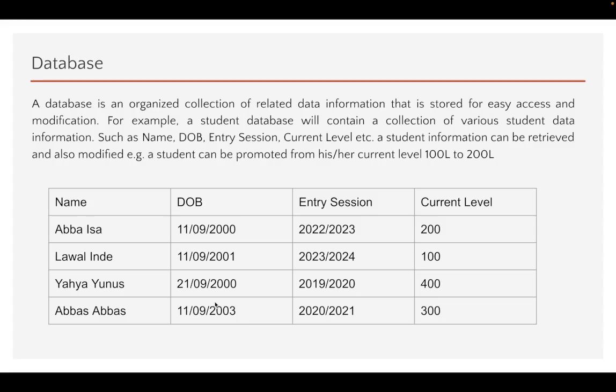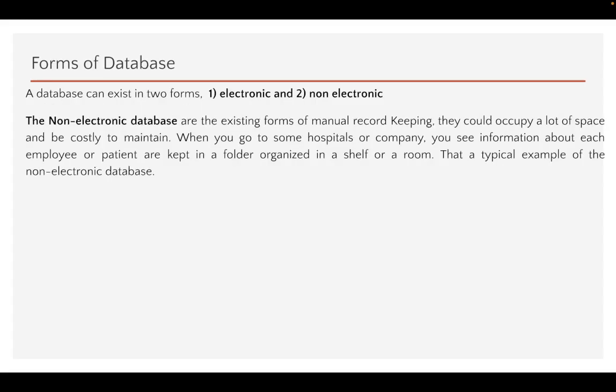In simple terms, that is what a database is. We actually have two forms of database: an electronic database and a non-electronic database. Let's start with the non-electronic database.